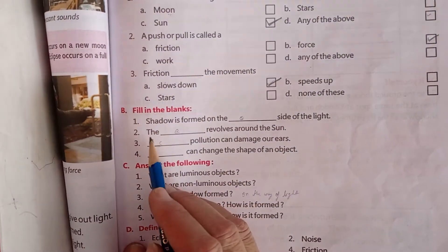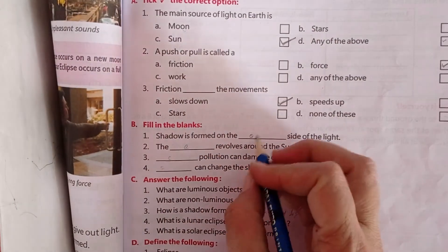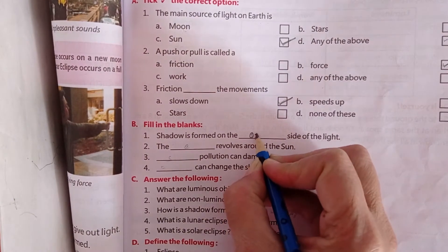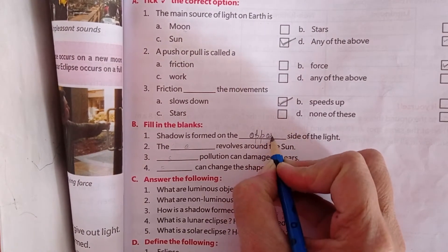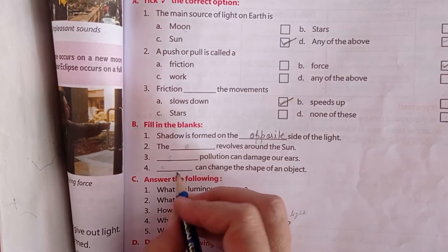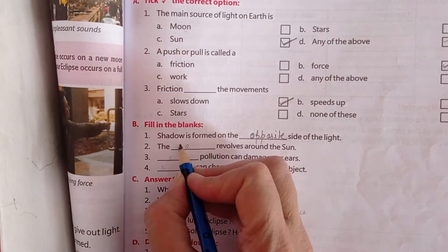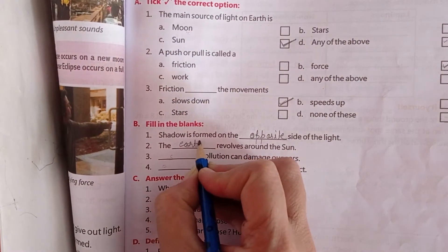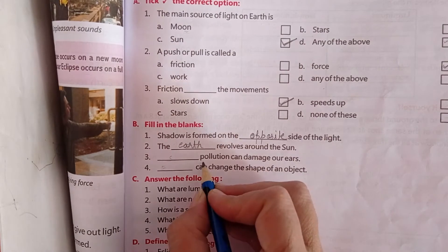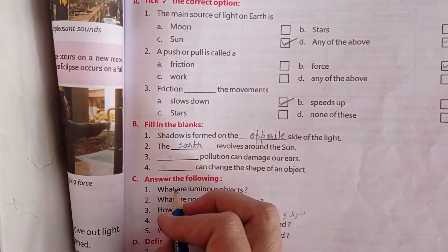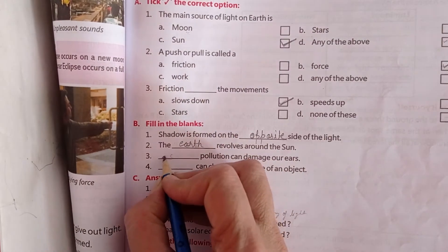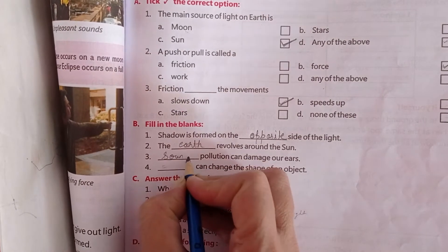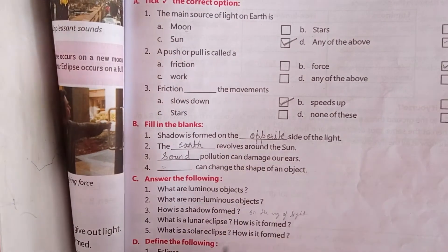The shadow is formed on the opposite side. The earth revolves around the sun. Noise pollution can damage our ears. Force can change an object.